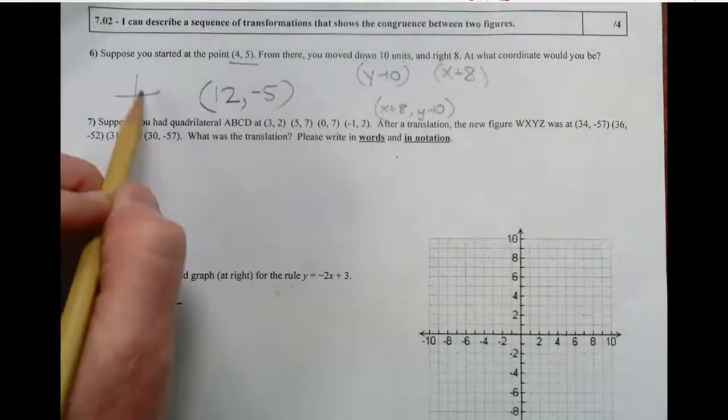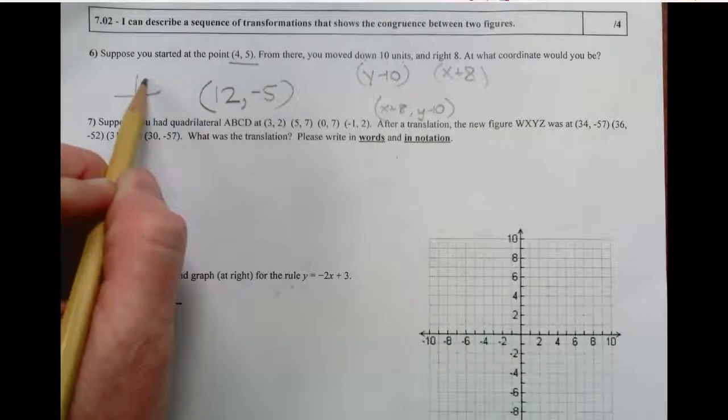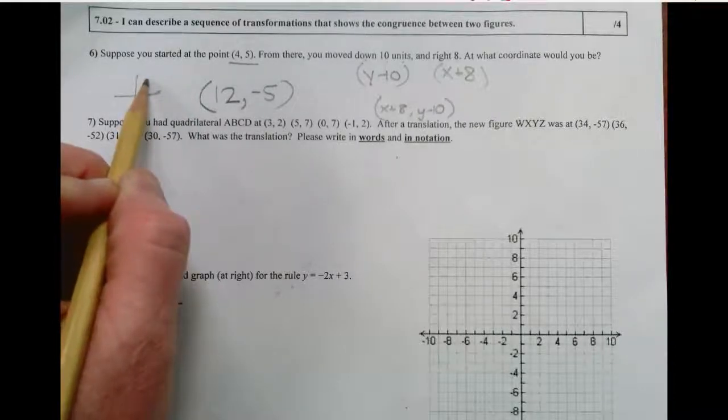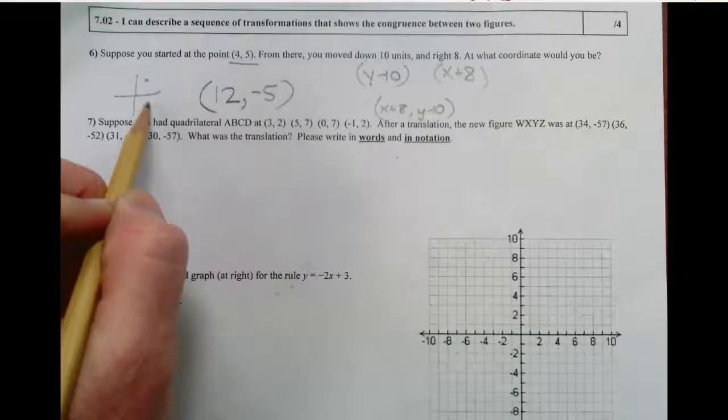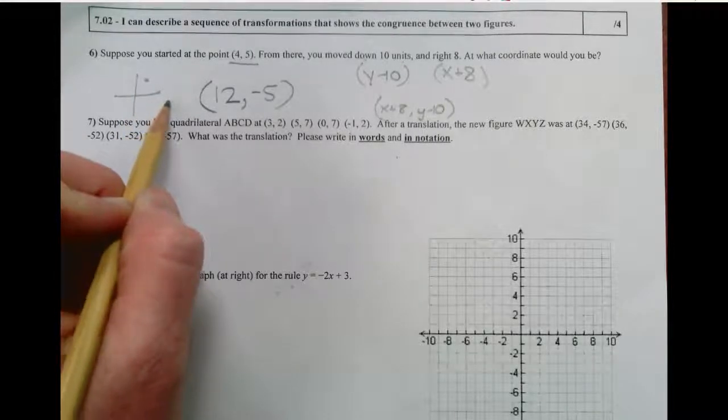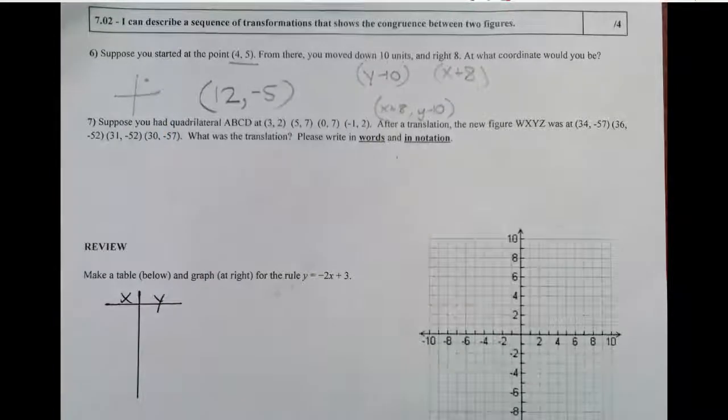Think about it. If we were at 4, 5, we're up here. Down 10 units. So we're down to negative 5. And right 8 units. So we're at 12.